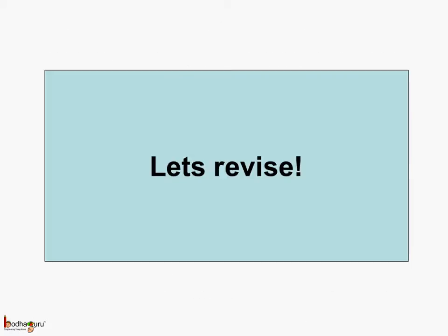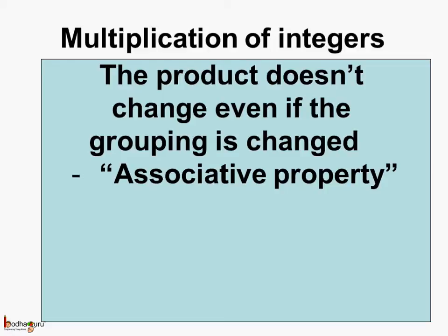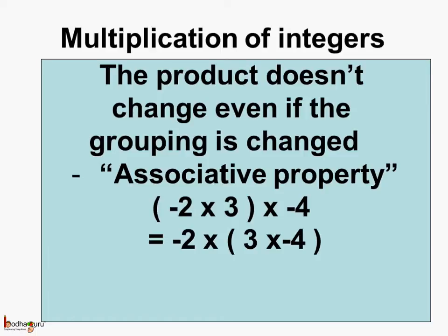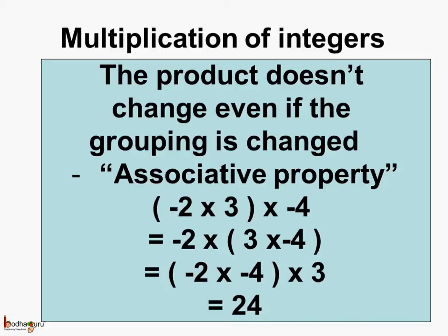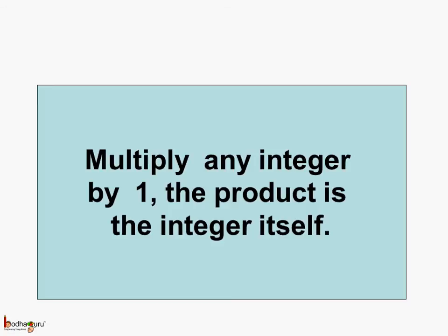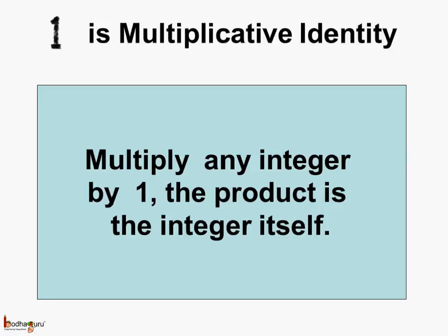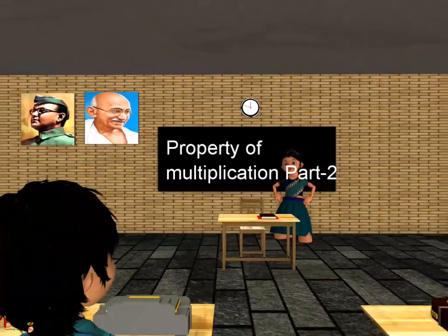Let us revise what we learned today. First, the associative property: the product doesn't change even if the grouping is changed during multiplication of 3 or more integers. As we saw, minus 2 multiplied by 3 multiplied by minus 4 gives the same result regardless of grouping — in all three cases the answer was 24. Second, the multiplicative identity: when we multiply any integer by 1, the product is the integer itself, so 1 is the multiplicative identity for integers. Bye-bye children!